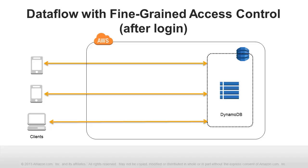Fine-grained access control for DynamoDB is integrated with AWS Identity and Access Management, also called IAM — a technology that allows customers to securely control access to AWS services and resources for their users. IAM roles specify sets of permissions for authenticated users. Fine-grained access control works by allowing your applications to assume IAM roles that specify access to particular DynamoDB items and attributes, or even to entire tables.